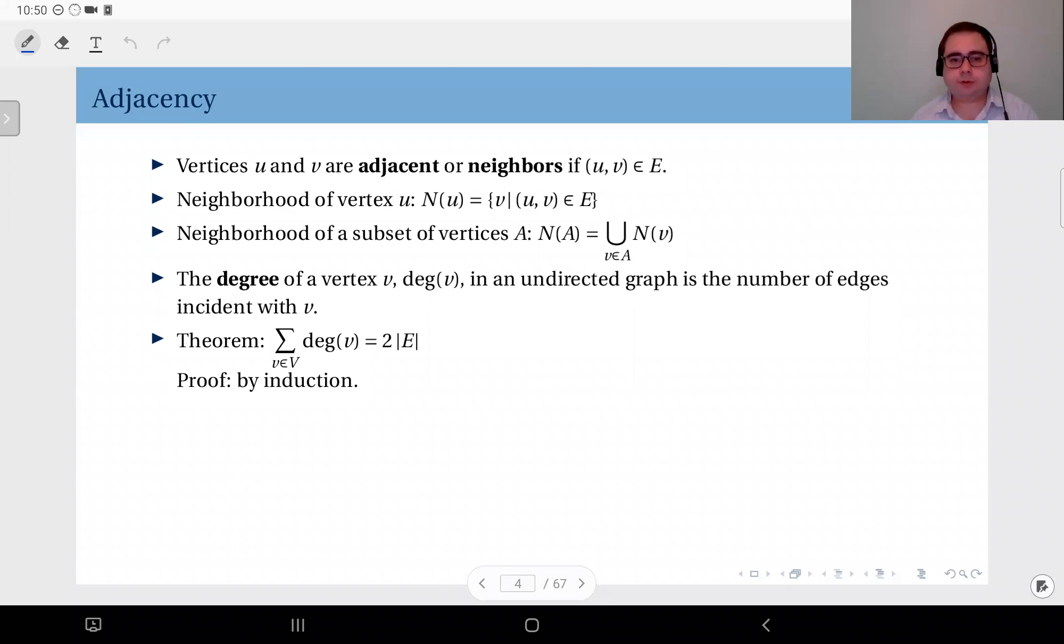Next we have some further definitions. We say that vertices u and v are adjacent or they are neighbors if there is an edge connecting u and v in set E.